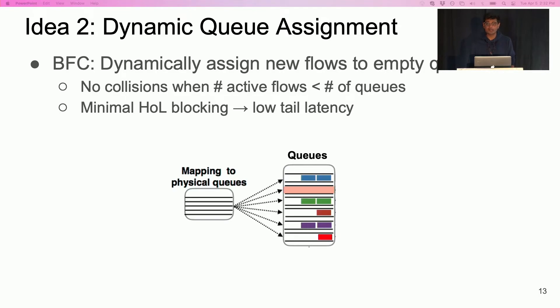Head of line blocking is unavoidable in this case. However, in such situations, even prior approaches suffer, and BFC still outperforms them. Dynamic queue assignment provides an approximation of per flow queue and is the key to achieving low tail latency.